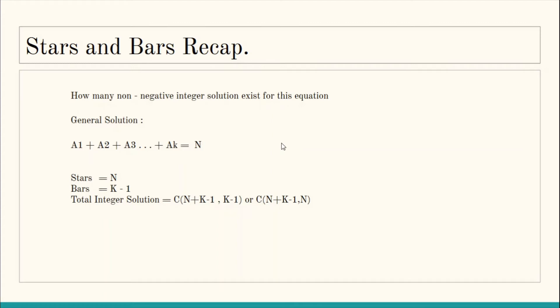So we are given k variables whose sum equals n, but this time instead of variables assuming values starting from zero, we need variables which start from one. We need to modify the stars and bars solution somehow so that it accommodates variables taking values of at least one.